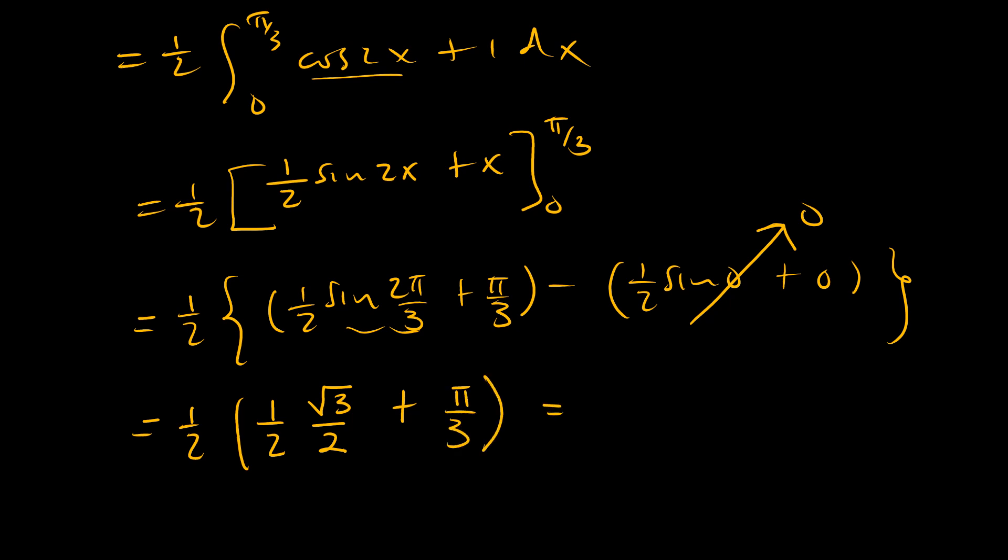Which is equal to, so we have 2 times 2 which is 4, times this half here, we have root 3 over 8 plus this 2 and this 3 becomes pi over 6.